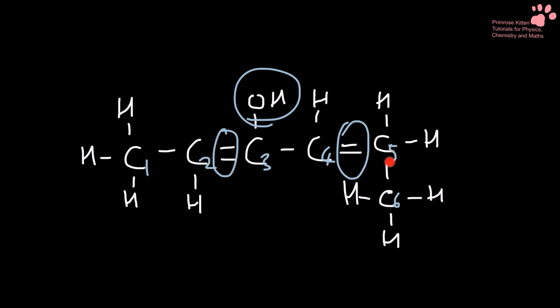And the longest carbon chain is going around the corner. This is not a branch, it's part of the carbon chain. So we have hex-2,4-diene and then we have a 3-hydroxy group. So 3-hydroxy-hex-2,4-diene.